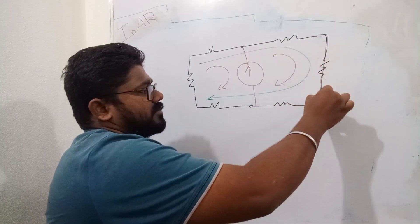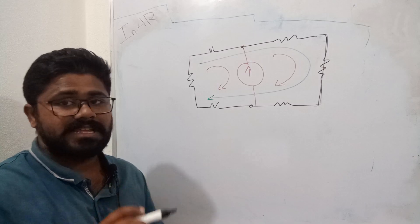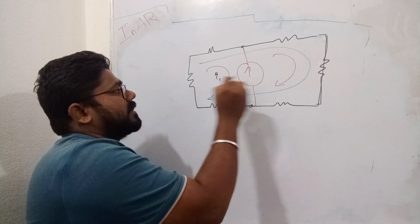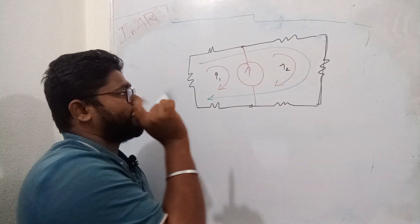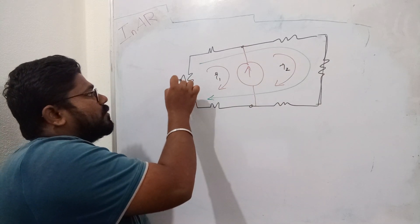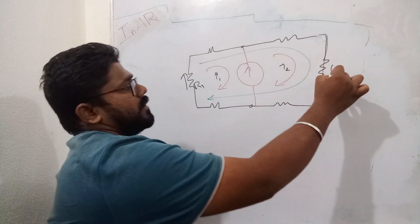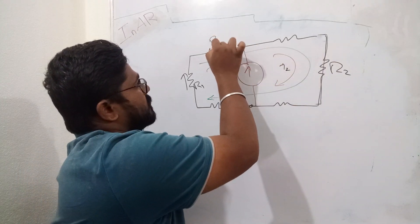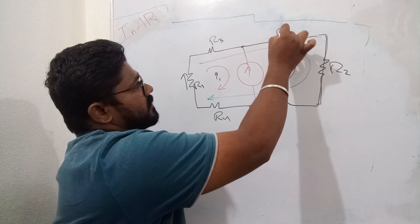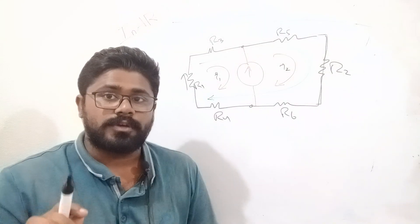This is the application of Maxwell's loop current method. We will try to assign the currents I1, I2, and so on. The voltage drop across each element — let us say R1, R2, R3, R4, R5, and R6 — are labeled for the resistors in the circuit.